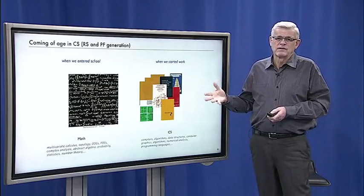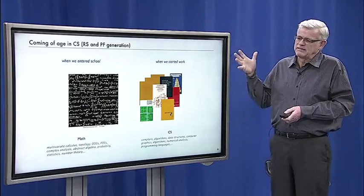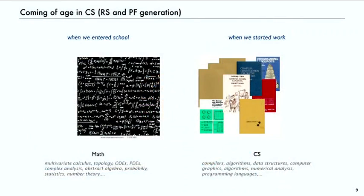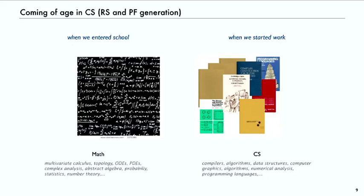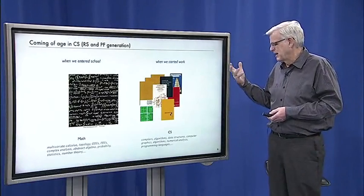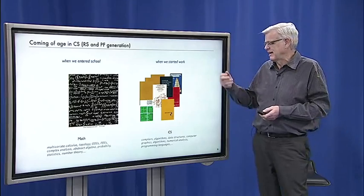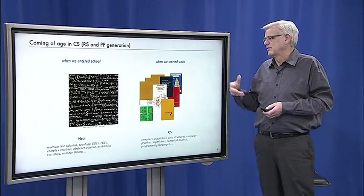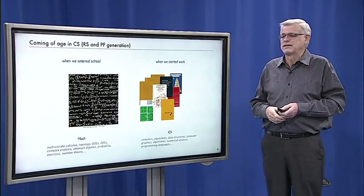And another important thing is that when we were in school and graduate school, the curriculum was about math. Everybody learned lots of math. I learned PDEs and abstract algebra and probability and topology. That's what people with an interest in working in technical fields did. But by the time we started research and teaching, there was computer science. People had to learn about compilers and algorithms and data structures and graphics and operating systems, programming languages, numerical analysis, and all kinds of fields related to computer science.